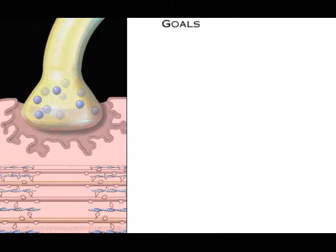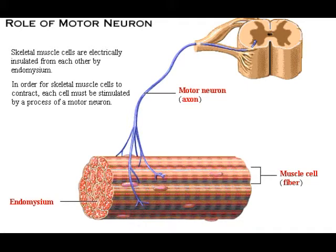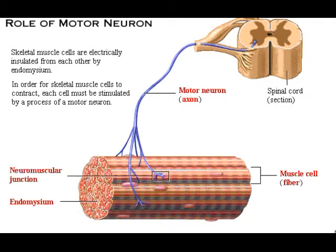Skeletal muscle cells are electrically insulated from each other by endomysium. In order for skeletal muscle cells to contract, each cell must be stimulated by a process of a motor neuron. Each motor neuron is a single nerve cell extending from the brain or spinal cord to the muscle, where it can stimulate several muscle cells. The axon is the elongated process of the nerve cell that carries impulses to the muscle. The neuromuscular junction is the place where the terminal portion of a motor neuron axon meets the muscle cell membrane. Click the neuromuscular junction to see it in an expanded view.